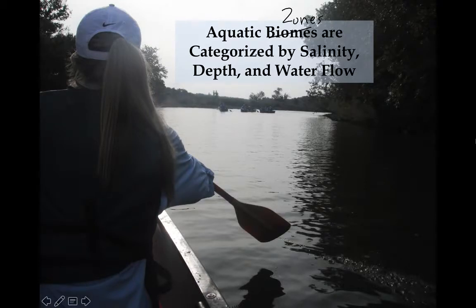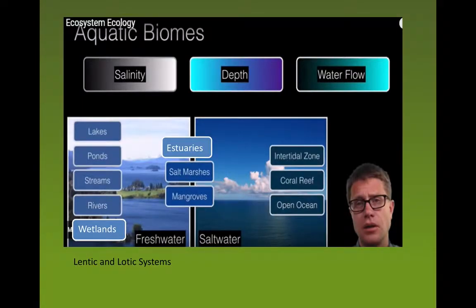Today's topic is the aquatic biomes, or aquatic life zones. They're categorized primarily by salinity, depth, and water flow — whether the water is moving or not. On the left, I've got this organized the way Paul Anderson organized it, with the freshwater biome zone. The ones circled in red are the flowing systems with a current — your lotic systems. The ones not circled are the lentic, the static ones. I've added estuaries in the middle along with salt marshes and mangroves, which are brackish water regions. The marine ones are shown on the right.